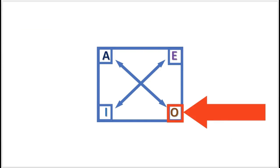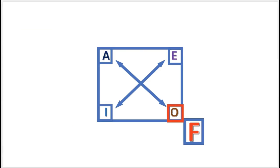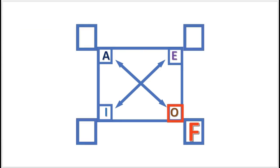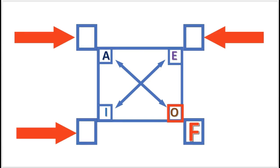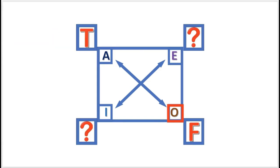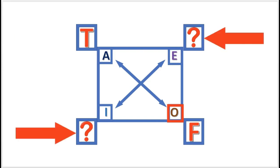Next practice problem: if O is false, what is the truth value of the other propositions? A is true. E and I are undetermined.